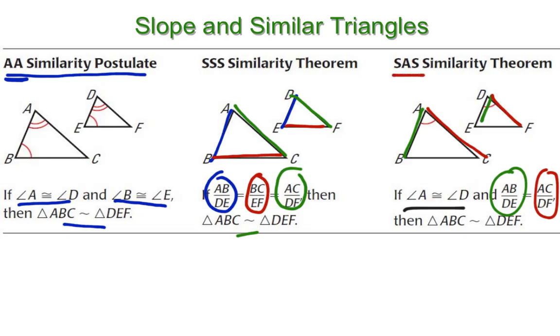So this one's called the side-angle-side, and notice that they're going kind of in order. So side, angle-side, side-angle-side here, whereas this one is just all three sides, and this one is two angles. So if I've got any one of these three things satisfied, two angles, all three sides, or a side, an angle, and then a side in that order, then I have enough information to say that the triangles themselves are similar.